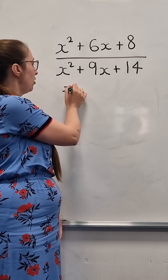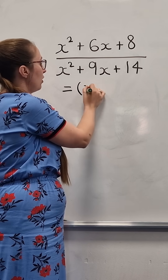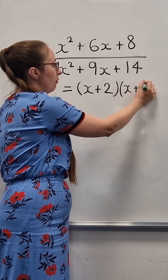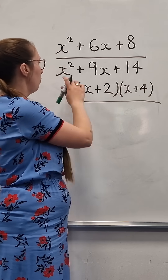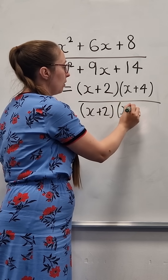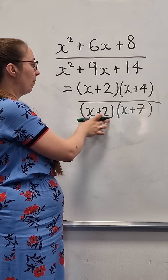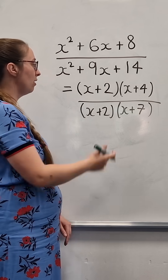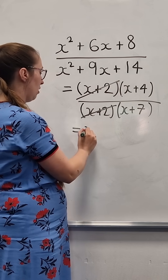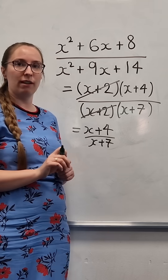So what we need to do is factorise the top and factorise the bottom. If we factorise the top, we'd get (x + 2)(x + 4), and on the bottom we have (x + 2)(x + 7). This is (x + 2)(x + 4) divided by (x + 2)(x + 7), so the common factor on the top and bottom is (x + 2). So our final answer is (x + 4) over (x + 7).